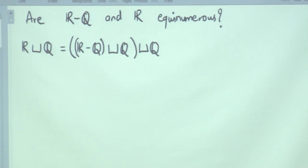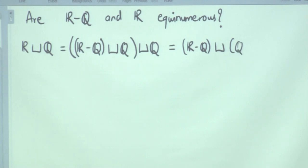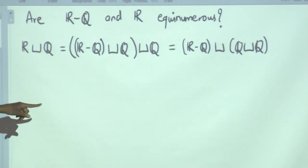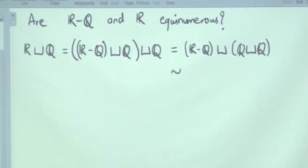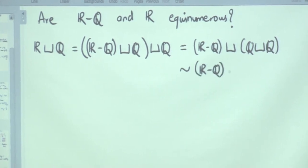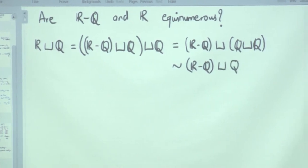Now, using associativity of disjoint unions, I can simply write it down as R minus Q disjoint union Q disjoint union Q. I simply shifted the parenthesis. Now look at the parenthesis on the right-hand side: Q disjoint union Q. Q is a countable set, so a finite union of countably infinite sets is countably infinite again. Therefore, this is in bijection with R minus Q disjoint union just one copy of Q.